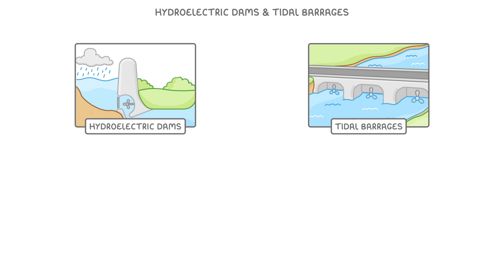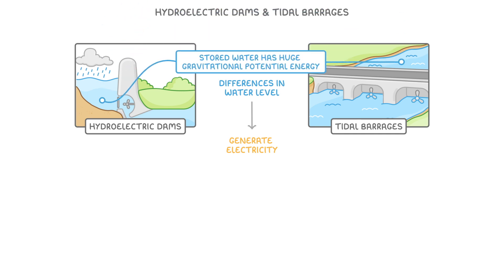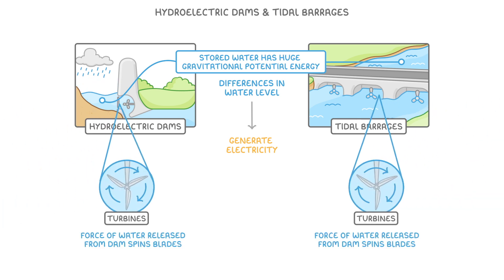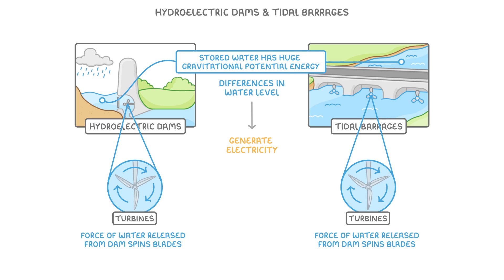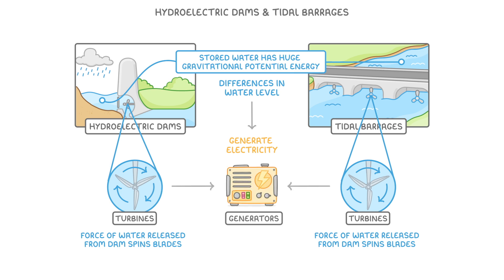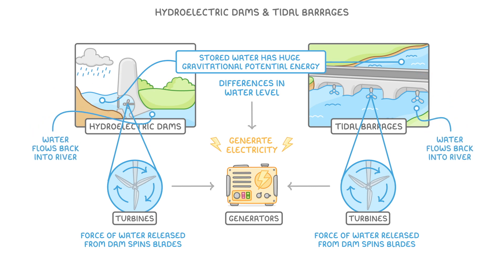In both of these cases, it's the difference in water levels that we're using to generate electricity. The difference in heights means that the stored water has a huge amount of gravitational potential energy, which we can convert into electricity. The force of the water being released from the reservoirs behind the dams spins the blades of the turbines inside the dams. These turbines are connected to generators that generate electricity as they spin. And finally, after passing through the turbines, the water flows back into the river on the other side of the dam.